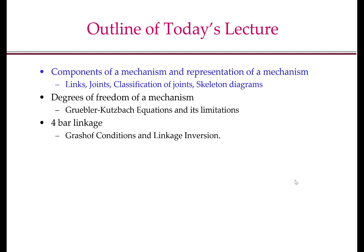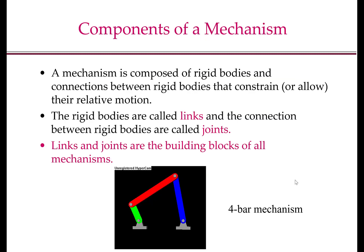So what are the components of a mechanism? A mechanism is composed of rigid bodies and connections between rigid bodies that constrain or allow their relative motion. This is a good first intuitive definition of a mechanism to have in mind. We have some special terms for the rigid bodies — we call them links — and the connections between the rigid bodies we call joints. So links and joints are the building blocks of all mechanisms.